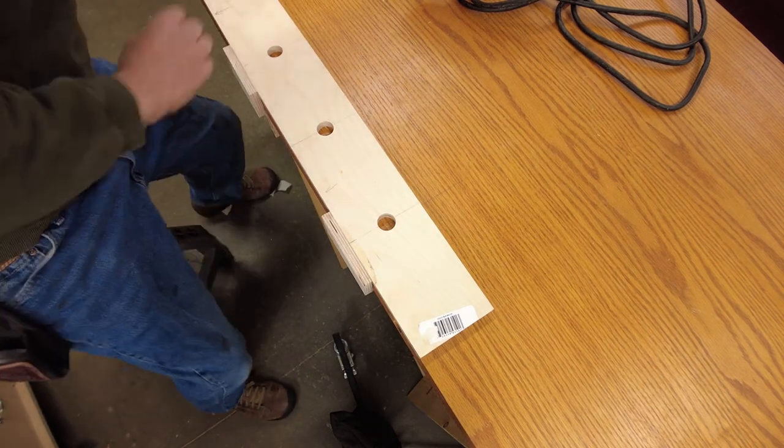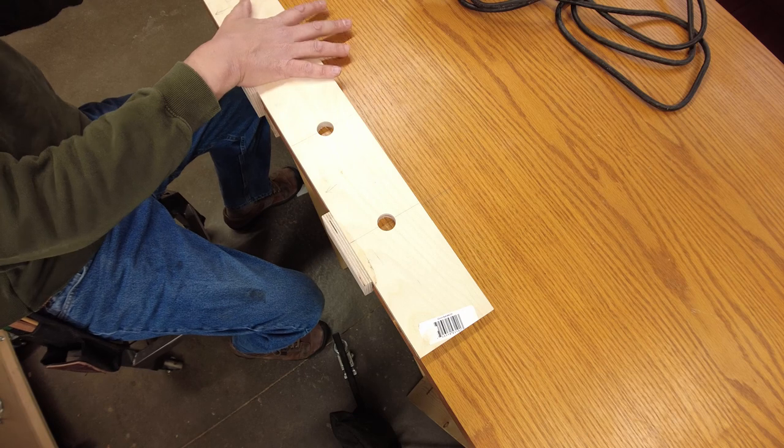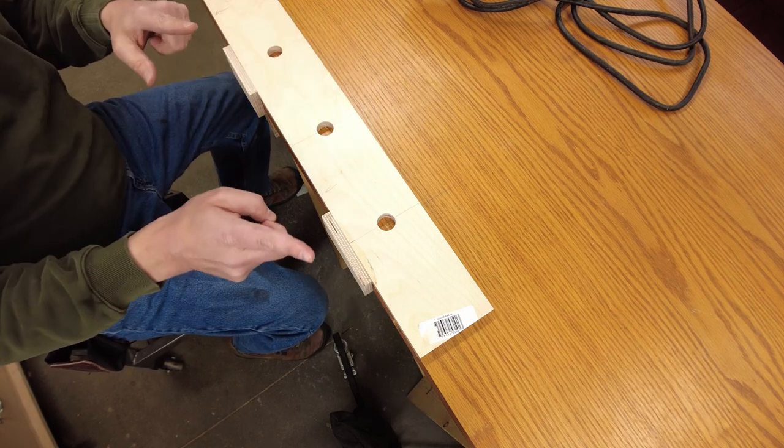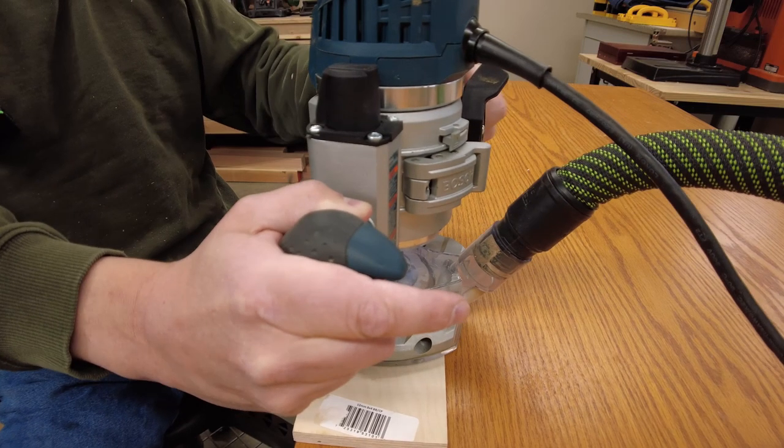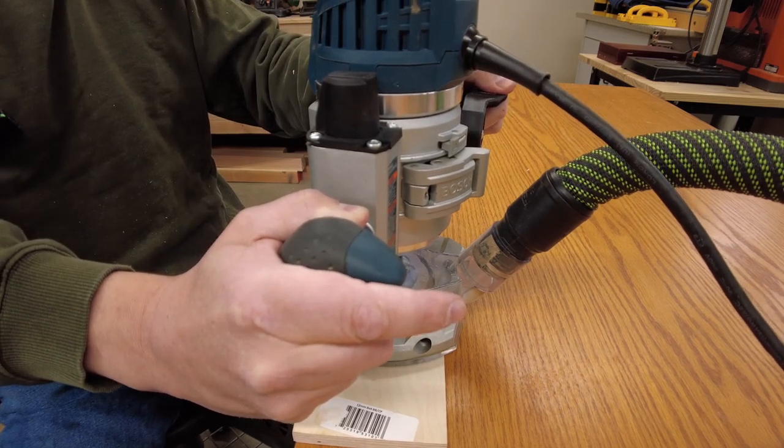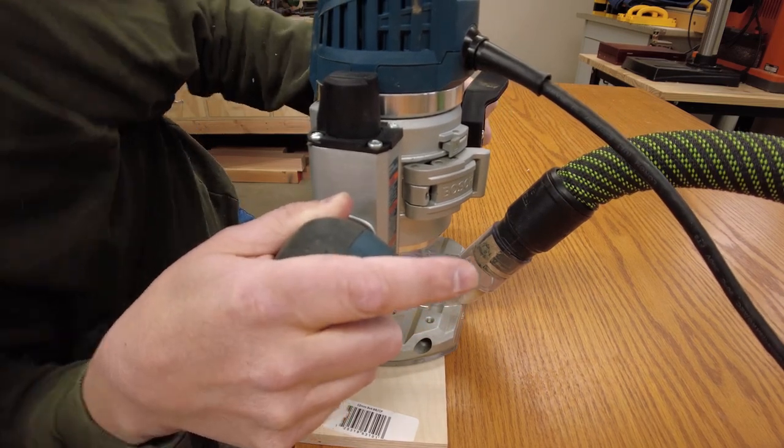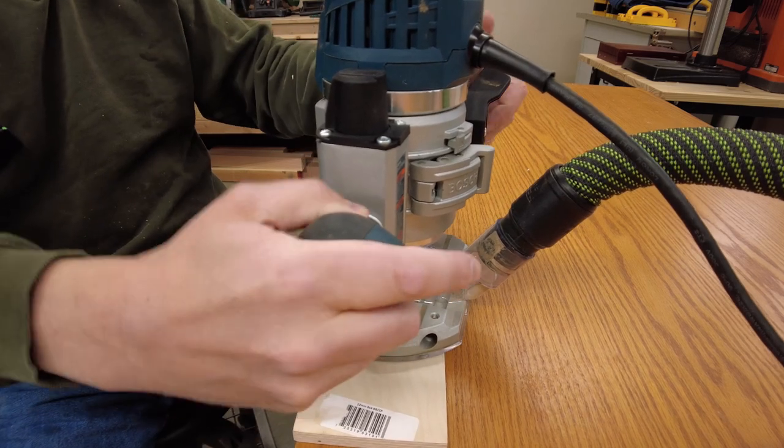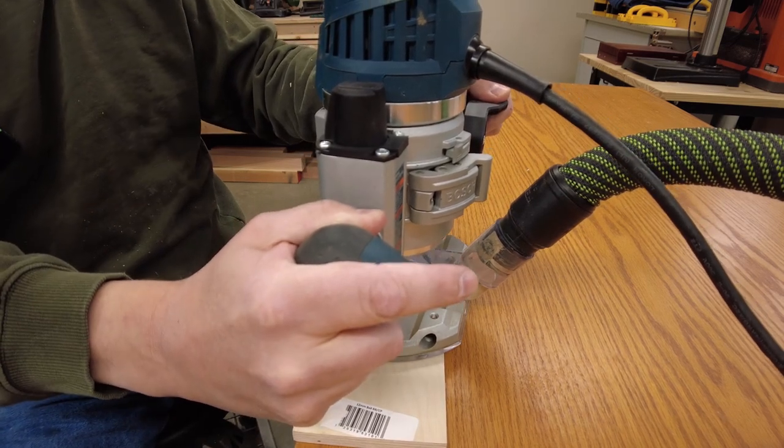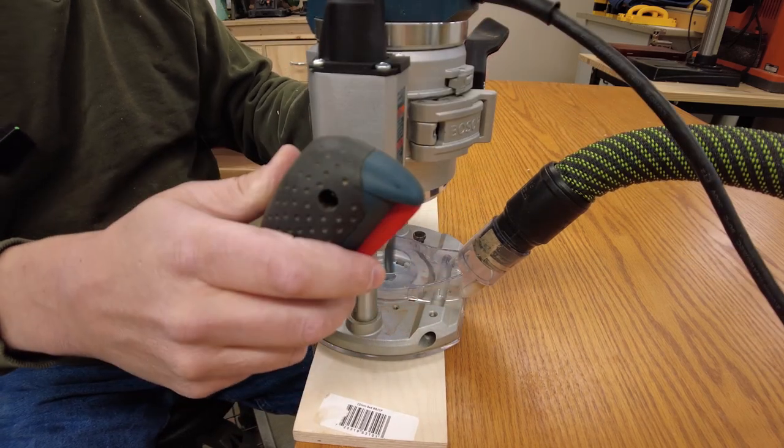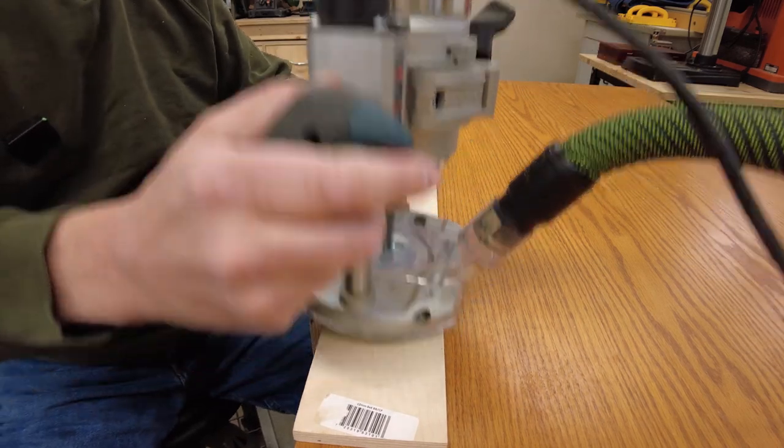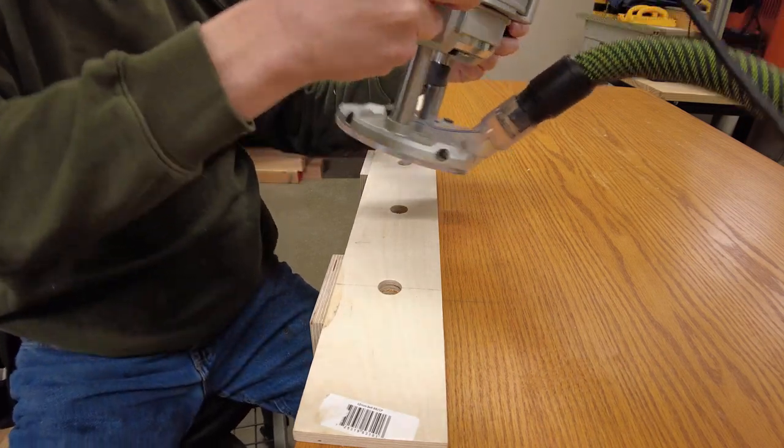So now I can route the holes on this side, pull this jig up, slide it down to the other end of the bench top and do those holes. All right so I've got the bit and the template guide installed and I've got my vacuum attached and I think I'll do this in a few passes going down about a quarter of an inch each time and then going clockwise a couple times and then a quarter inch down and I'll keep doing that until I get all the way through the door.